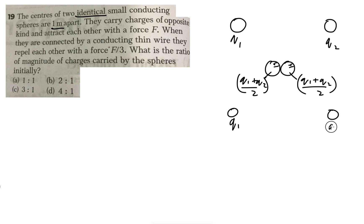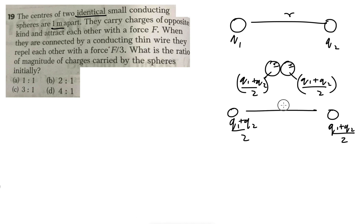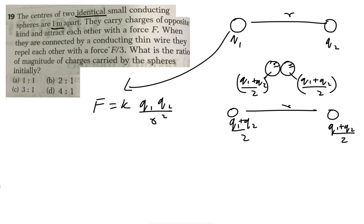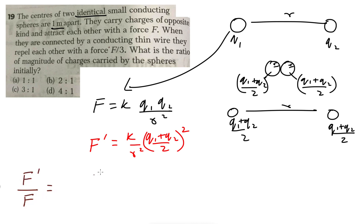When separated by the same distance r, we don't need to worry about how much that distance is. The force in the first case is F = k·q1·q2 / r². The force in the second case, F', is k·(q1+q2)/2 · (q1+q2)/2 divided by r². The ratio F'/F gives (q1+q2)² / (4·q1·q2), since k and r² cancel.